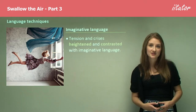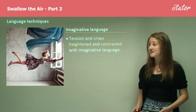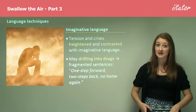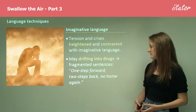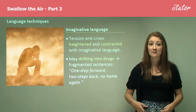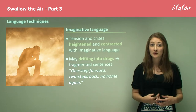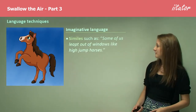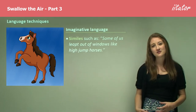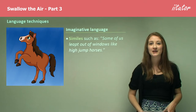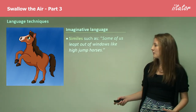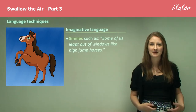Imaginative language is also used significantly in this work. Tension and crises are heightened and contrasted with imaginative language. For example, when Mae drifts into the drug scene and a violent, addictive gang world, we see the fragmented sentence: 'One step forward, two steps back, no home again.' That really fragmented line is suggestive of Mae's personal struggle, showing the interaction between language and content. Similes such as 'some of us leapt out of windows like high jump horses' demonstrate how really beautiful, poetic language is used in prose to describe a truly awful scene — that beautiful image describing a harsh reality.